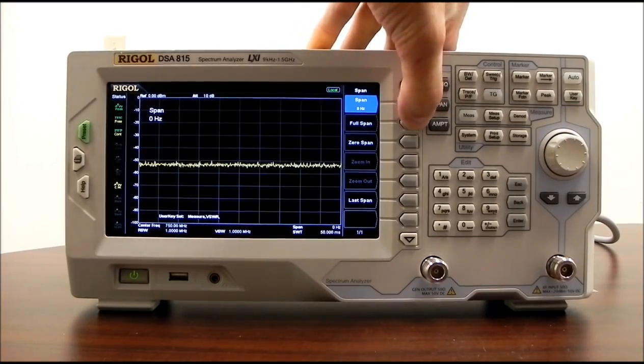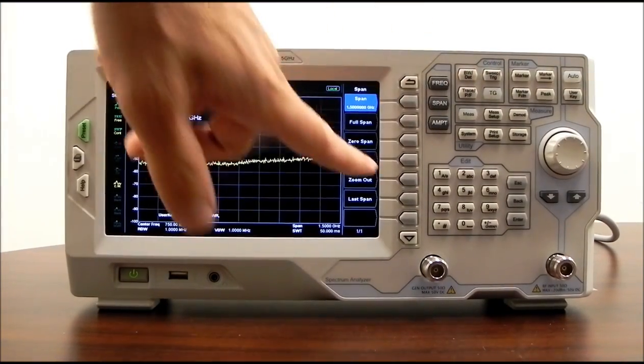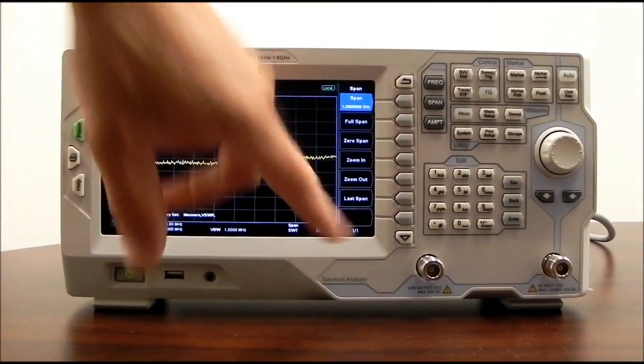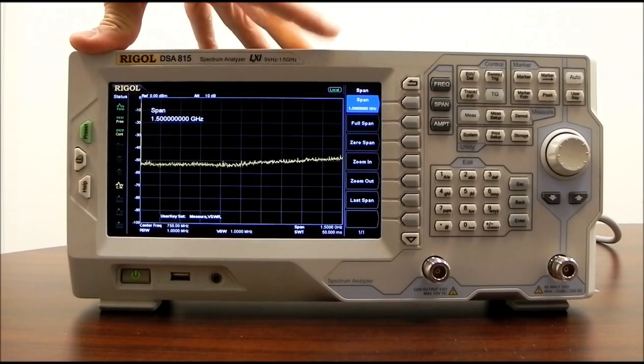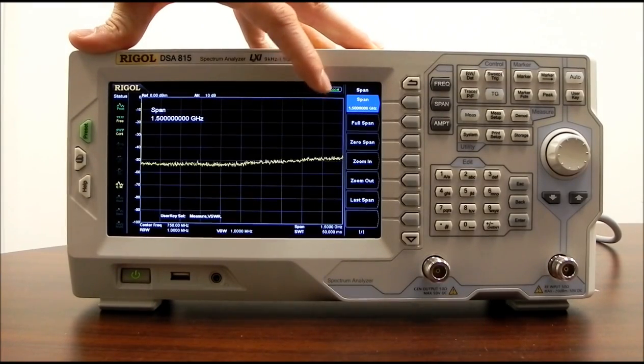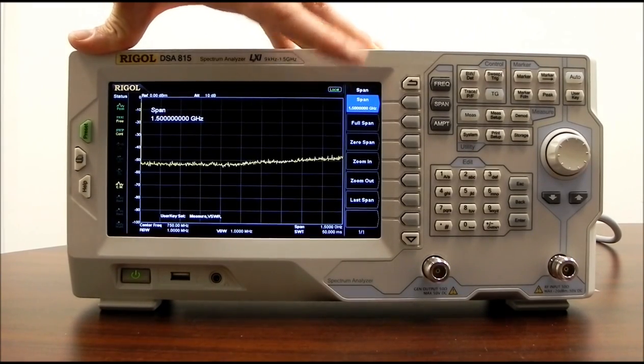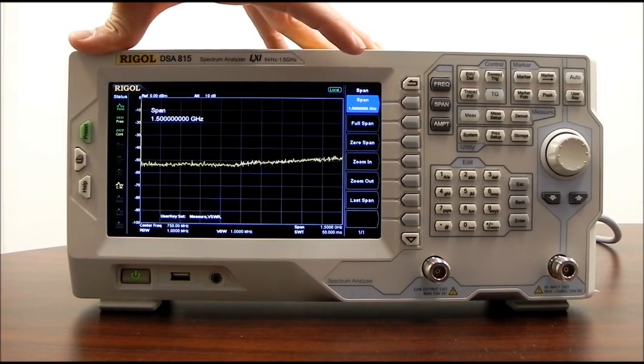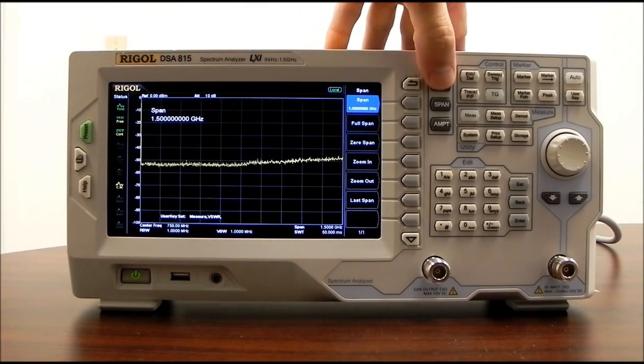We can also go back out to full span and we can zoom in and zoom out. And then we have a last span. So if you zoom in and you're not exactly happy with the area you've zoomed into, you can hit last span and it will pop back out, which can be extremely helpful as well.